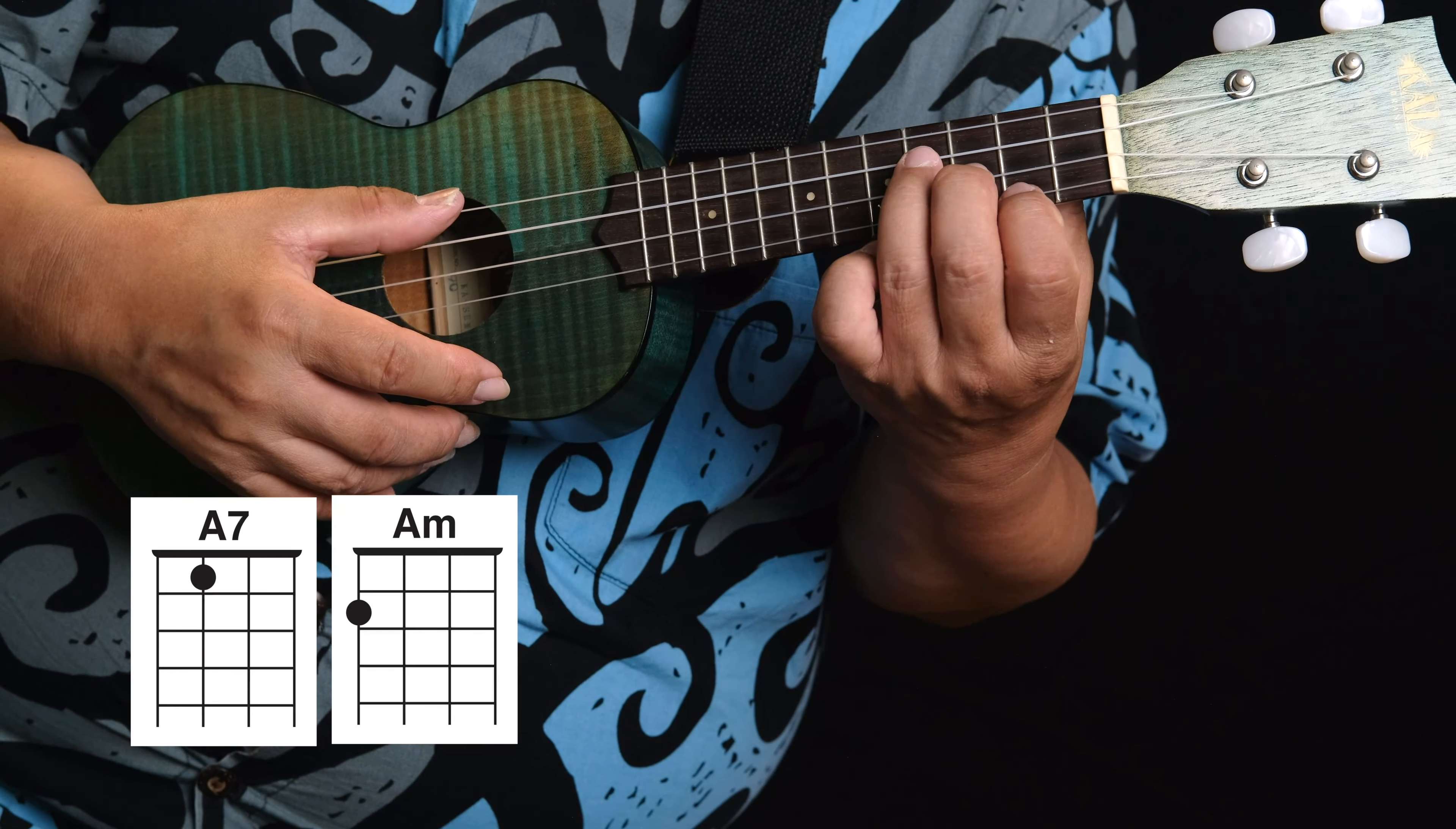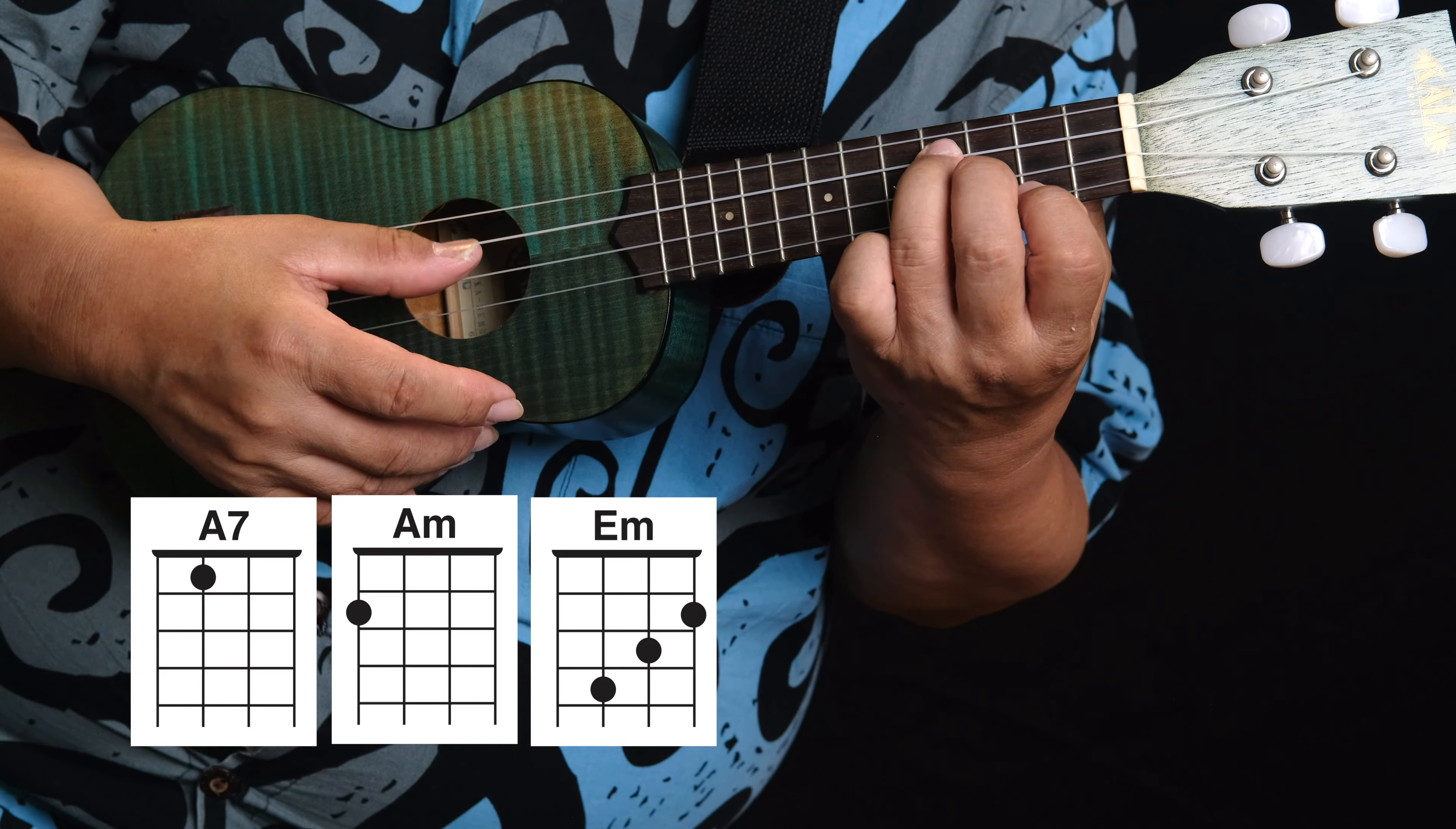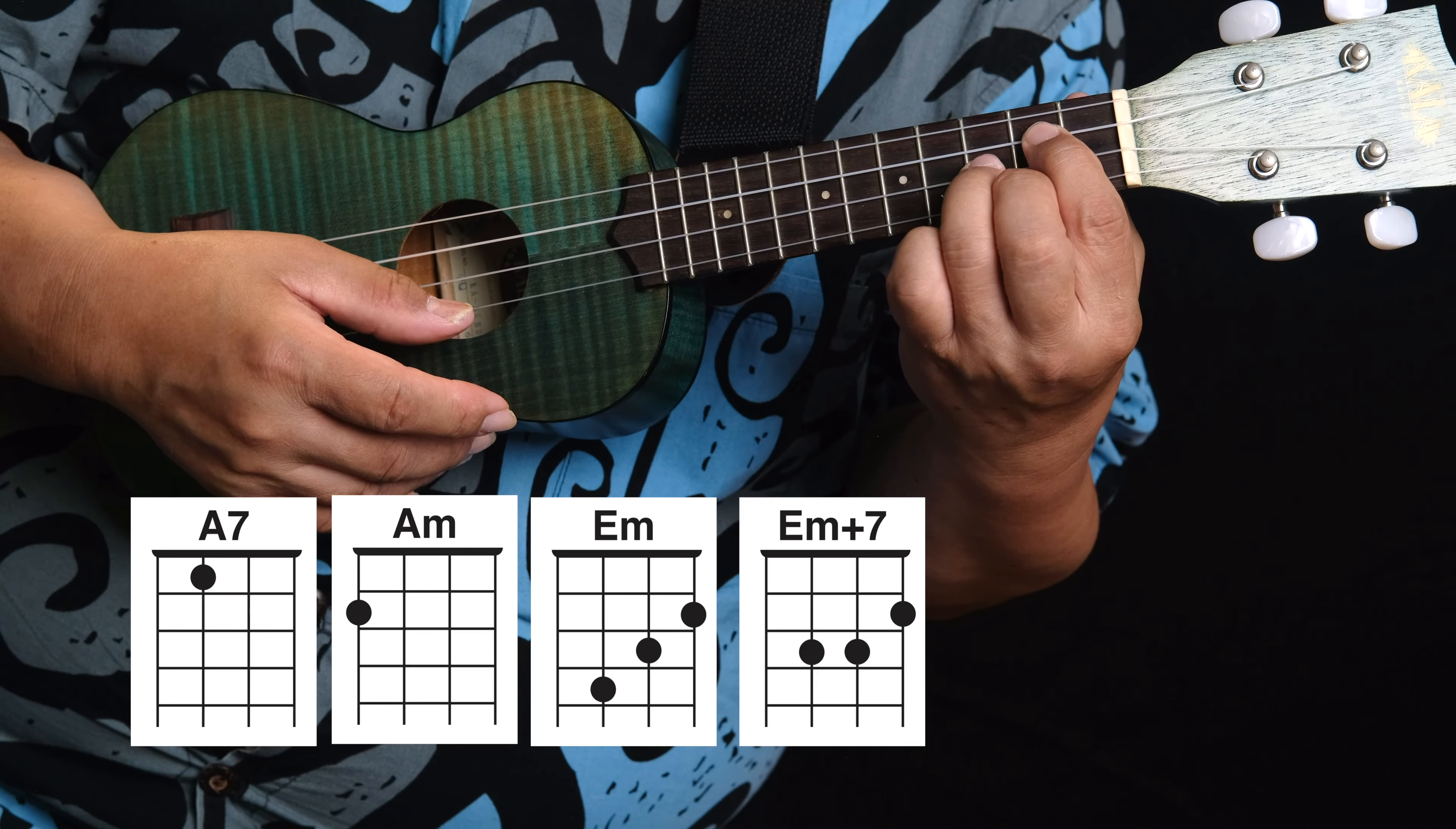Okay, for this walk down, there's an area in the song where we did E minor earlier. This note goes down, then you have the E minor+7. This note goes down, you got an E minor 7.